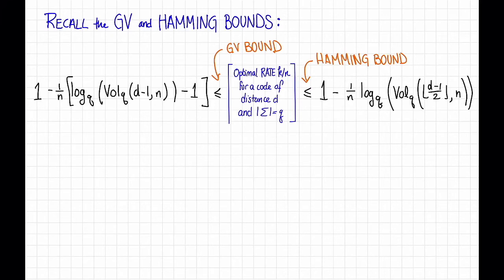Let's recall that the GV and the Hamming bounds look like this. That is, they bound the optimal rate k/n that's possible for a code of distance d and alphabet size q. And notably, both of them involve the volume of a q-ary Hamming ball.